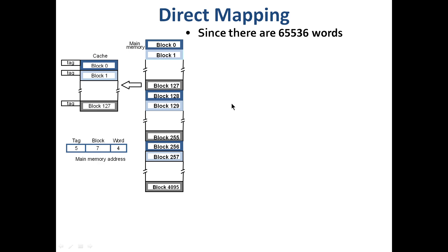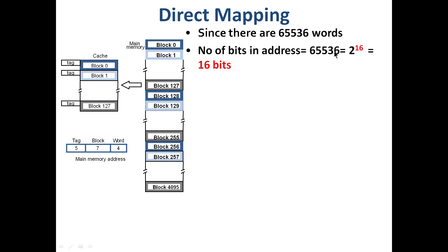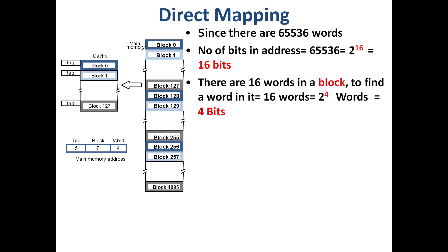We have 65,536 words in main memory, which is 2 raised to 16. So the address has 16 bits. This 16-bit address is logically divided into fields.